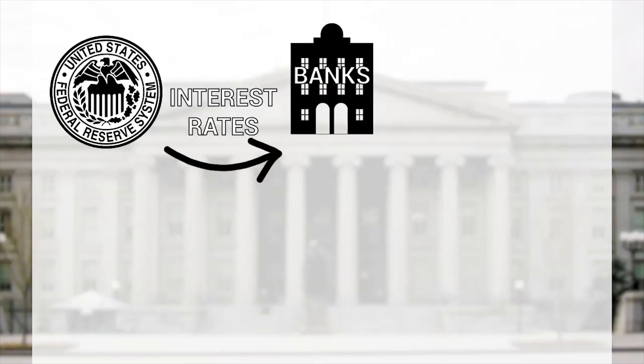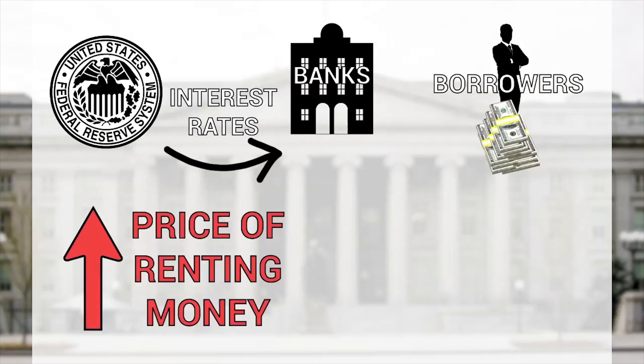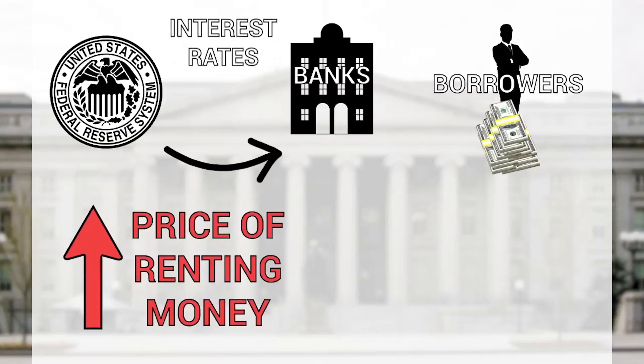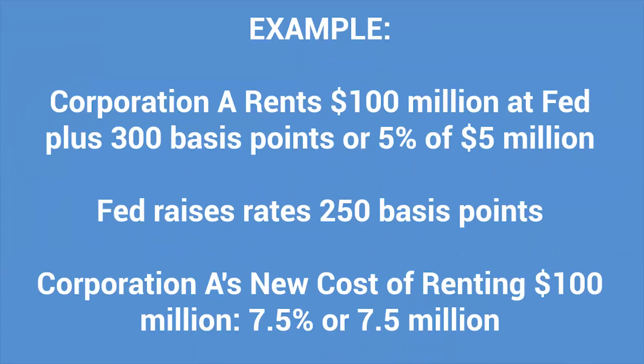So the Fed — the thing that controls the price of renting money to banks who then rent the money to borrowers — raises the price of renting that money, hoping to bring down inflation. That price hike makes the cost of renting money for a corporation way higher. That higher price of renting money is collateral damage from the bombs the government is setting off to fight the war on inflation.